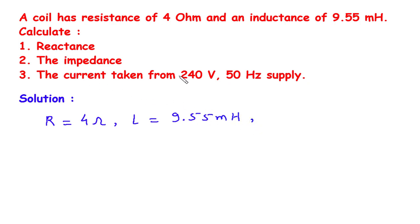We have to calculate reactance, that is X, then the impedance that is Z, then the current taken from 240V 50Hz supply. That is voltage is equal to 240V and frequency is equal to 50Hz.